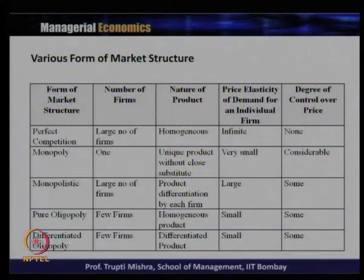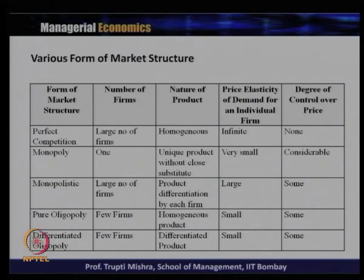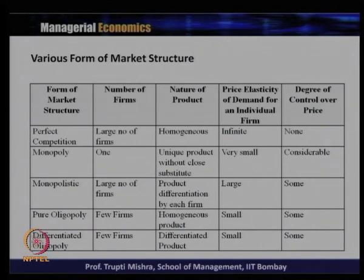Taking the number of firms, nature of product, price elasticity of demand for an individual firm, and degree of control over price — these are the variables on which different market structures are based. The first is perfect competition: large number of firms, homogeneous product, price elasticity of demand for an individual is infinite, and degree of control over price is none because price is decided by market demand and supply. Monopoly: one firm, unique product without close substitute, price elasticity of demand is very small, and degree of control over price is considerable.